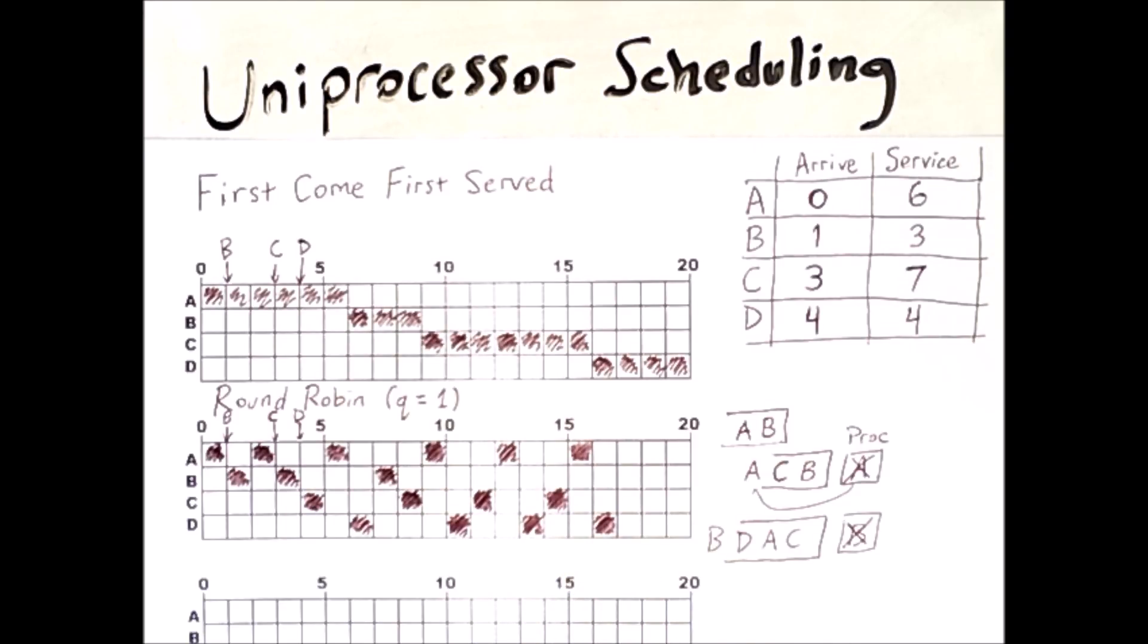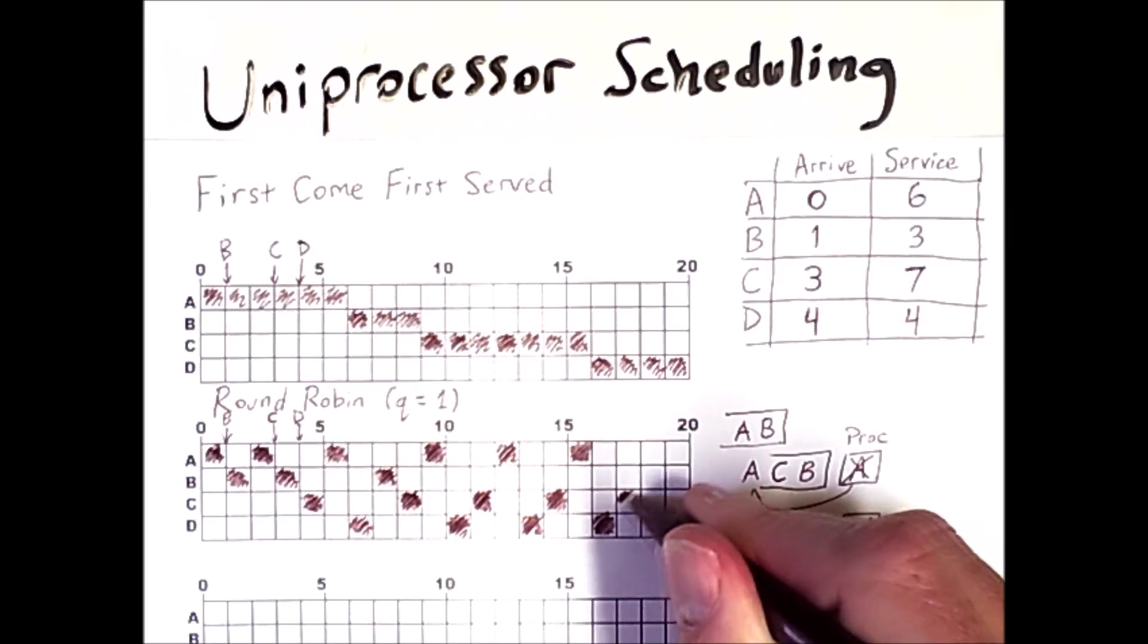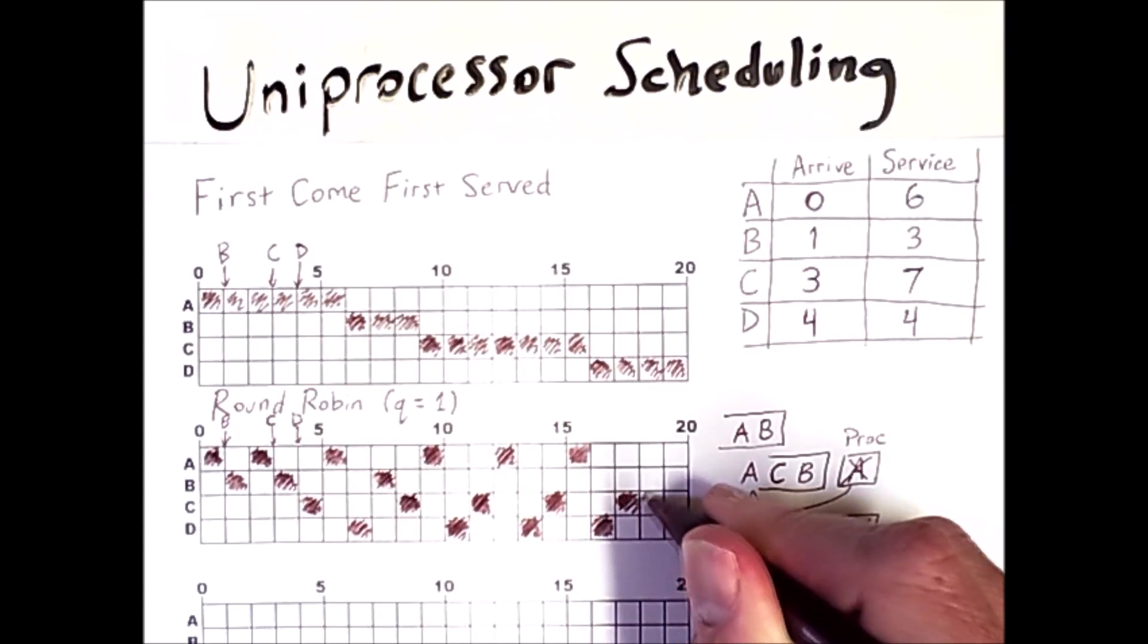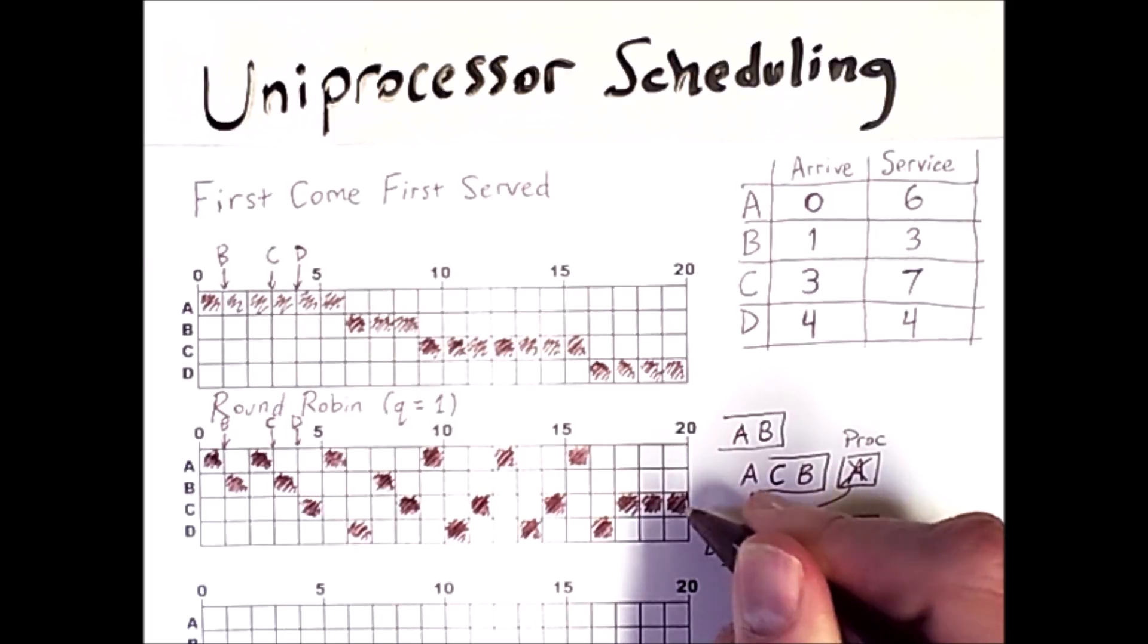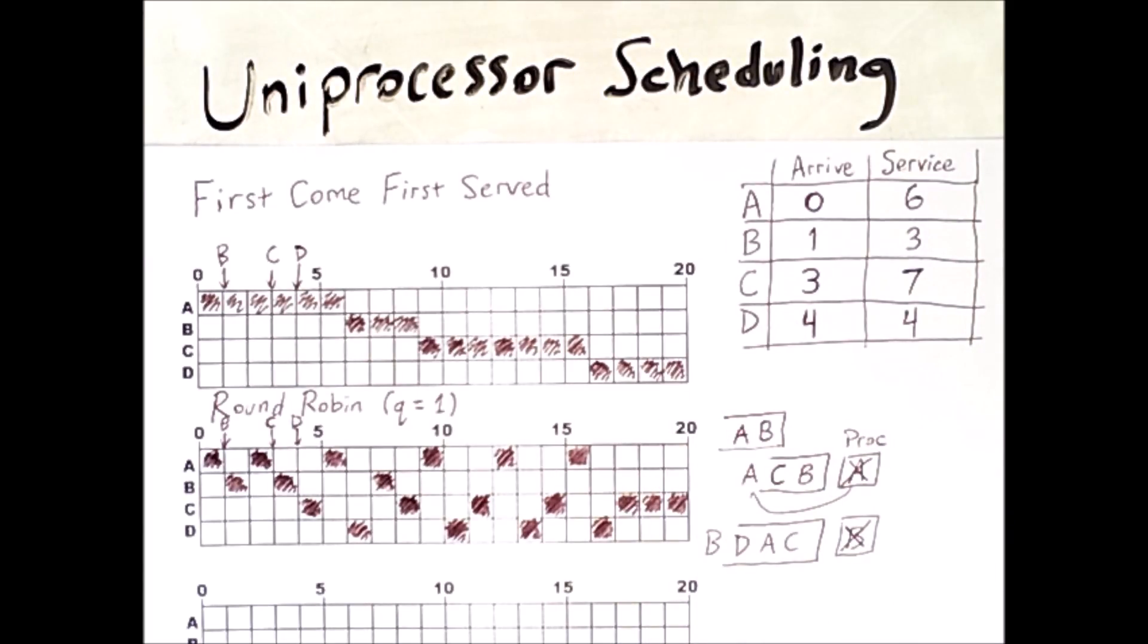And so all that is left is for C to run to completion. Now C has completed one, two, three, four units. And sure enough, its service time is seven. It has exactly three units left. And so those will fill in here. So it is possible for a process to run consecutively even if its time quantum would otherwise expire. This can only happen if there are no other waiting processes in the system. So this is an example of round robin with a quantum of one.